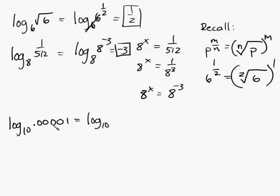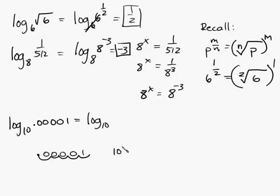So for log base 10 of 0.00001, we need 10 to some power to equal that decimal. Counting the decimal places: 0.00001 has 5 places, so this is 10 to the negative 5. And 10 to the negative 5 equals 0.00001. So the answer is negative 5.